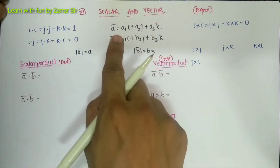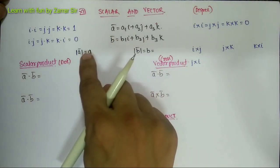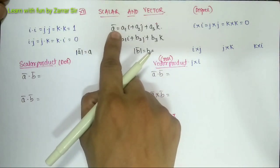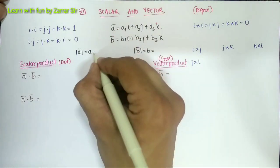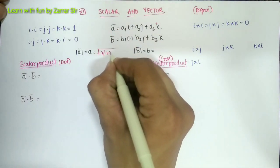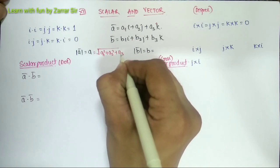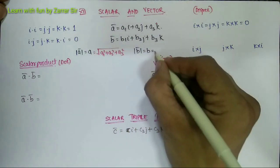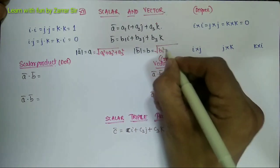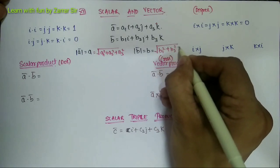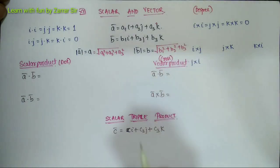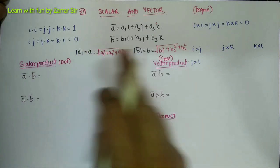Before starting with that, I'll let you know what you mean by magnitude of this vector. The magnitude of a bar is nothing but square root of a1 squared plus a2 squared plus a3 squared. Similarly, magnitude of b bar will be square root of b1 squared plus b2 squared plus b3 squared. Do remember this.